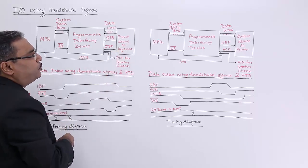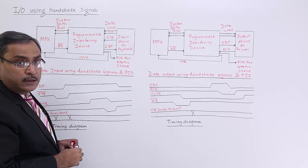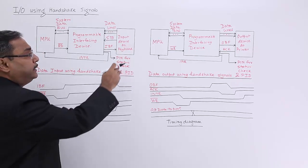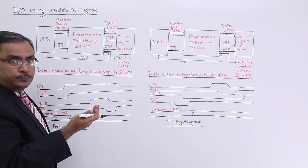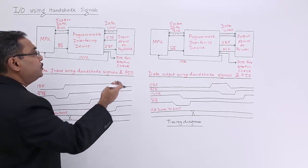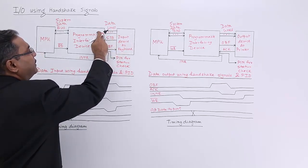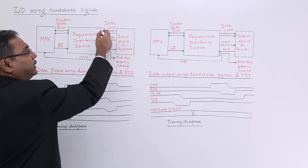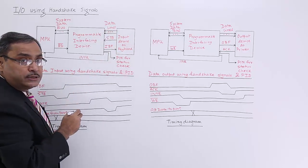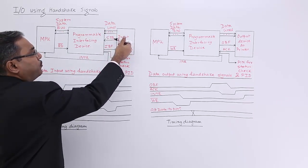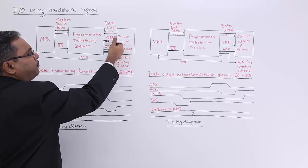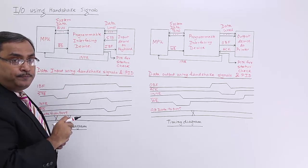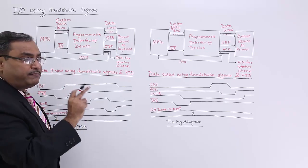We have considered the keyboard as the input device. When a user presses a key, the keyboard produces a scan code. That scan code comes through the data lines into an input port of the programmable interfacing device. After putting the data in the input port register, the keyboard will also make the strobe line enabled to indicate that one data byte has been put in its input port buffer or register.